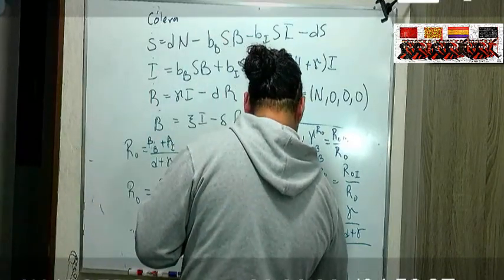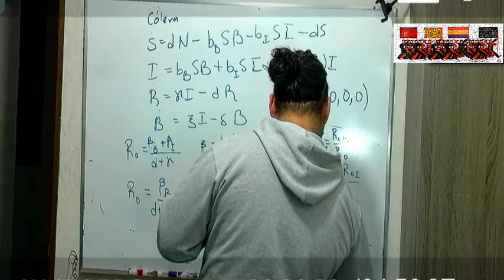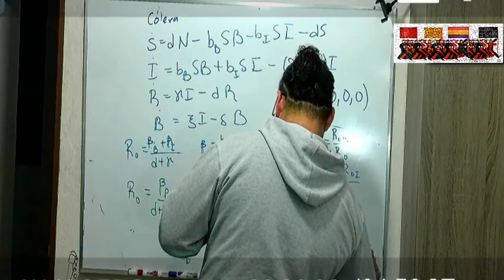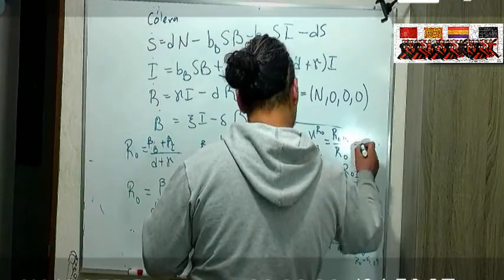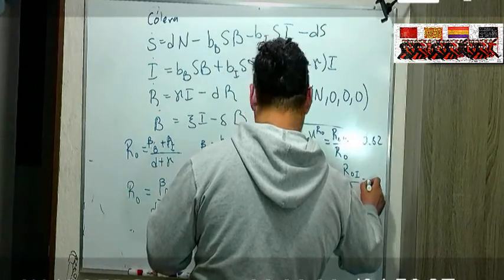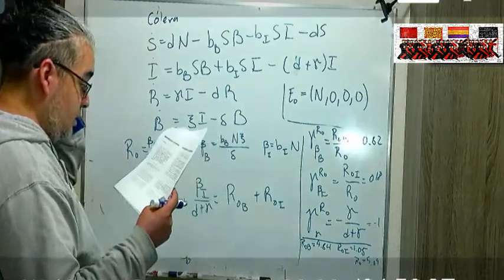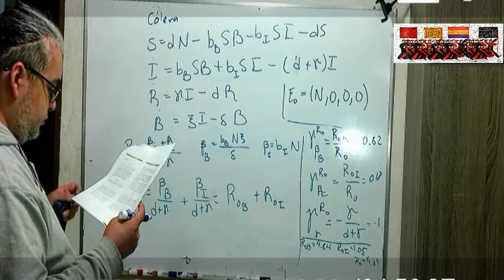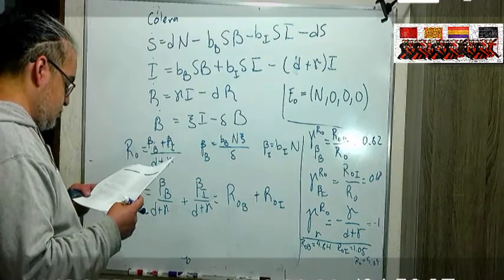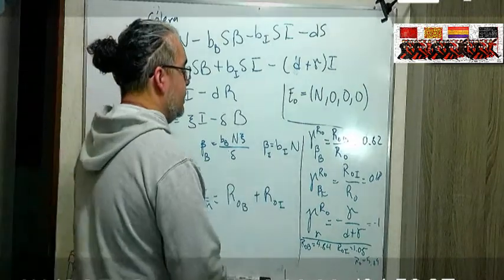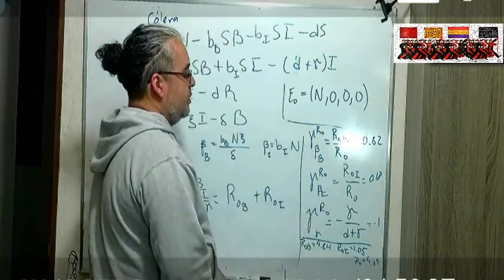Ahora tomando de algún caso concreto, R0 B es 4.84, R0 I es 1.05, y el R0 es 5.89 que es un montón, es grandísimo. Pero aquí esto de aquí es 0.82, este de aquí es 0.18, y este es menos 0.18.